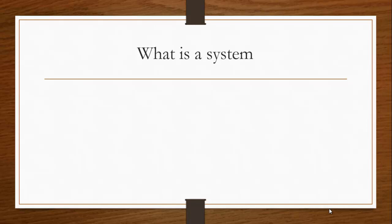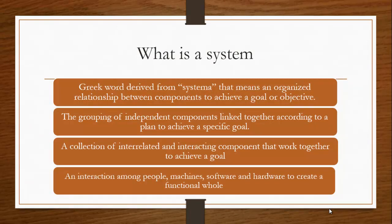What is a system? The word system is derived from the Greek word 'systema,' which simply means an organized relationship between any set of components to achieve some common cause or objective. A system can also be defined as an orderly grouping of independent components linked together according to a plan to achieve a specific goal. System can further be defined as a collection of interrelated and interacting components that work together to achieve a goal, or as the combination of people, machines, software, and hardware to create a functional whole towards achieving a particular objective.